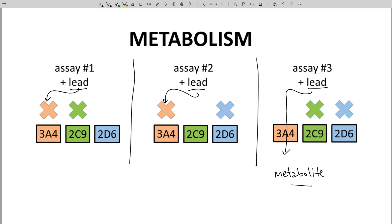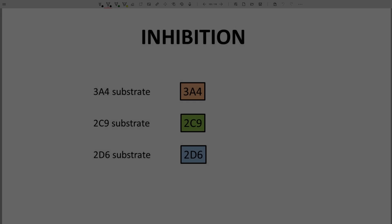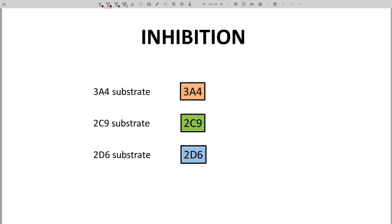There are many ways to set up these experiments. The point of this slide is to show that these experiments are feasible. How do you identify if a lead is a CYP inhibitor? In theory, you could take a liver microsome assay with three different CYP isoforms and known substrates for each isoform.